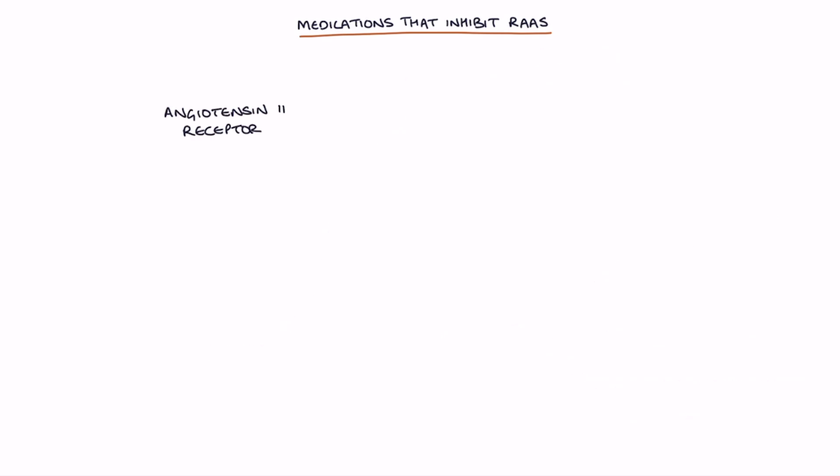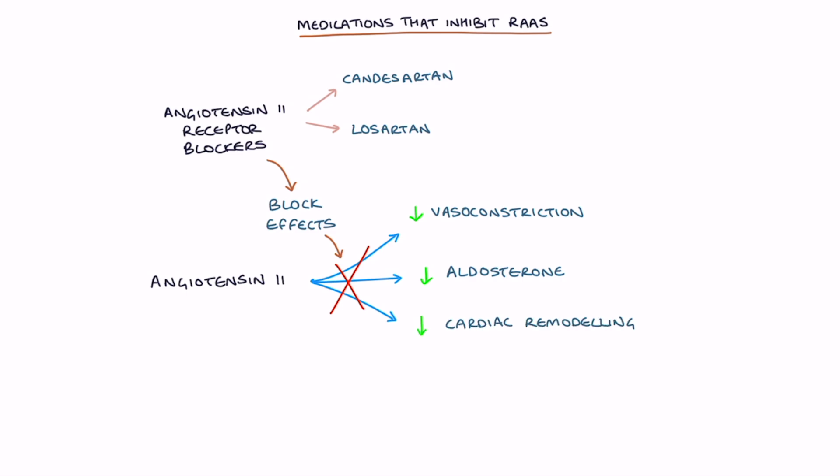Angiotensin-2 receptor blockers, for example candesartan and losartan, work by blocking angiotensin-2 receptors, blocking the effects of angiotensin-2. Like ACE inhibitors, they result in less vasoconstriction, lower aldosterone, and less cardiac remodeling over the longer term.